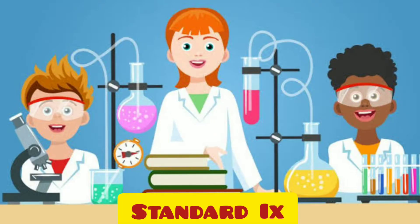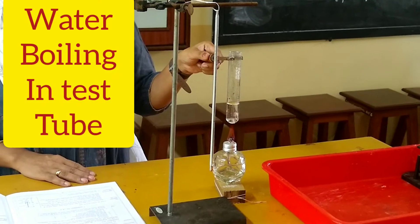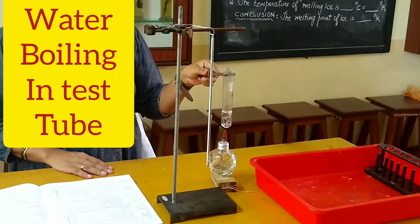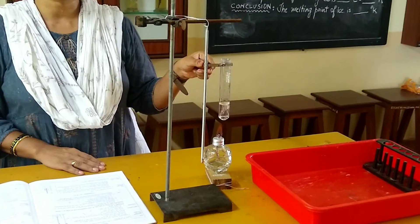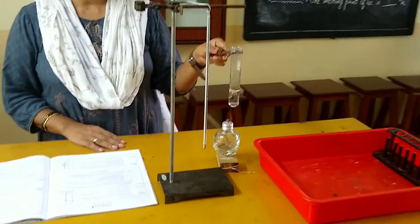Hi students, today we are doing the second experiment, experiment number 1B1, and the aim is to find the boiling point of water. Here you can see the test tube and the water has already started boiling. We need to check the temperature using the laboratory thermometer.